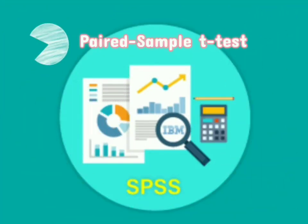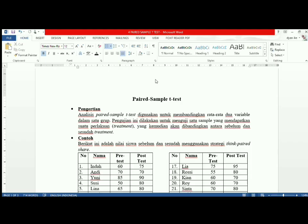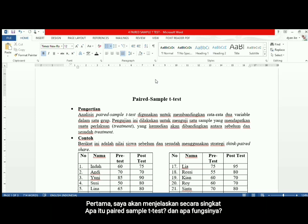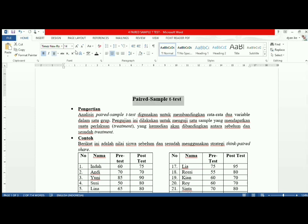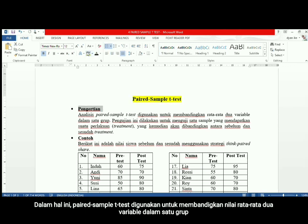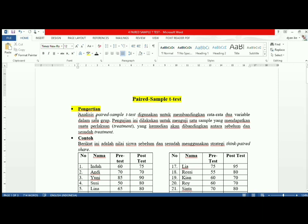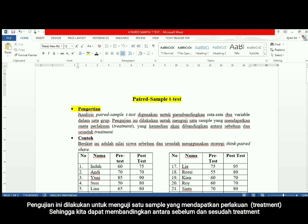This video tutorial explains how to find out the pair-sample t-test and how to analyze the result. First, I'm going to explain what exactly the pair-sample t-test is and what its functions are. The pair-sample t-test is used to compare the mean score of two variables in one group. This test is done to examine one sample that has a treatment, so we can compare before and after treatment.